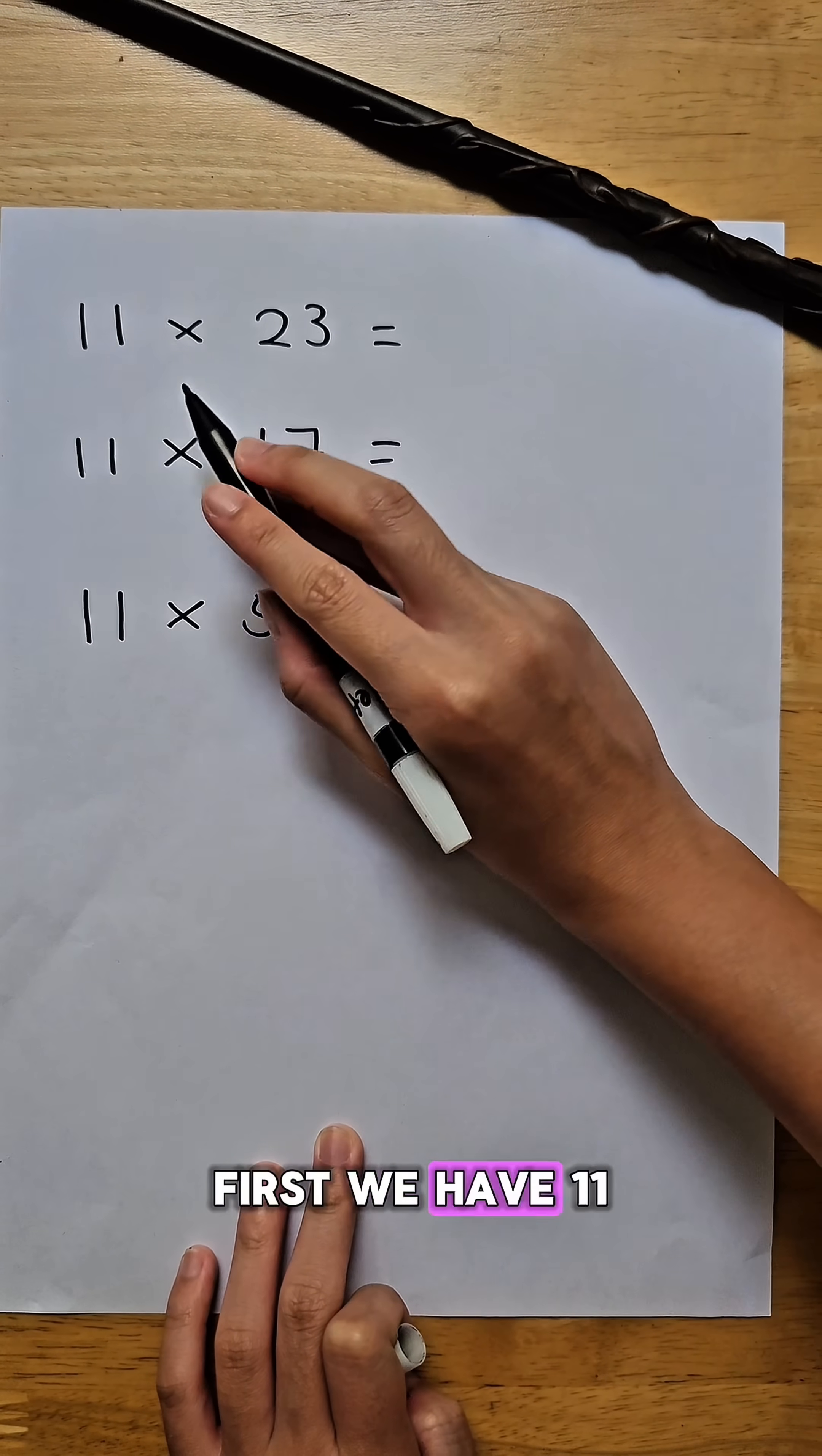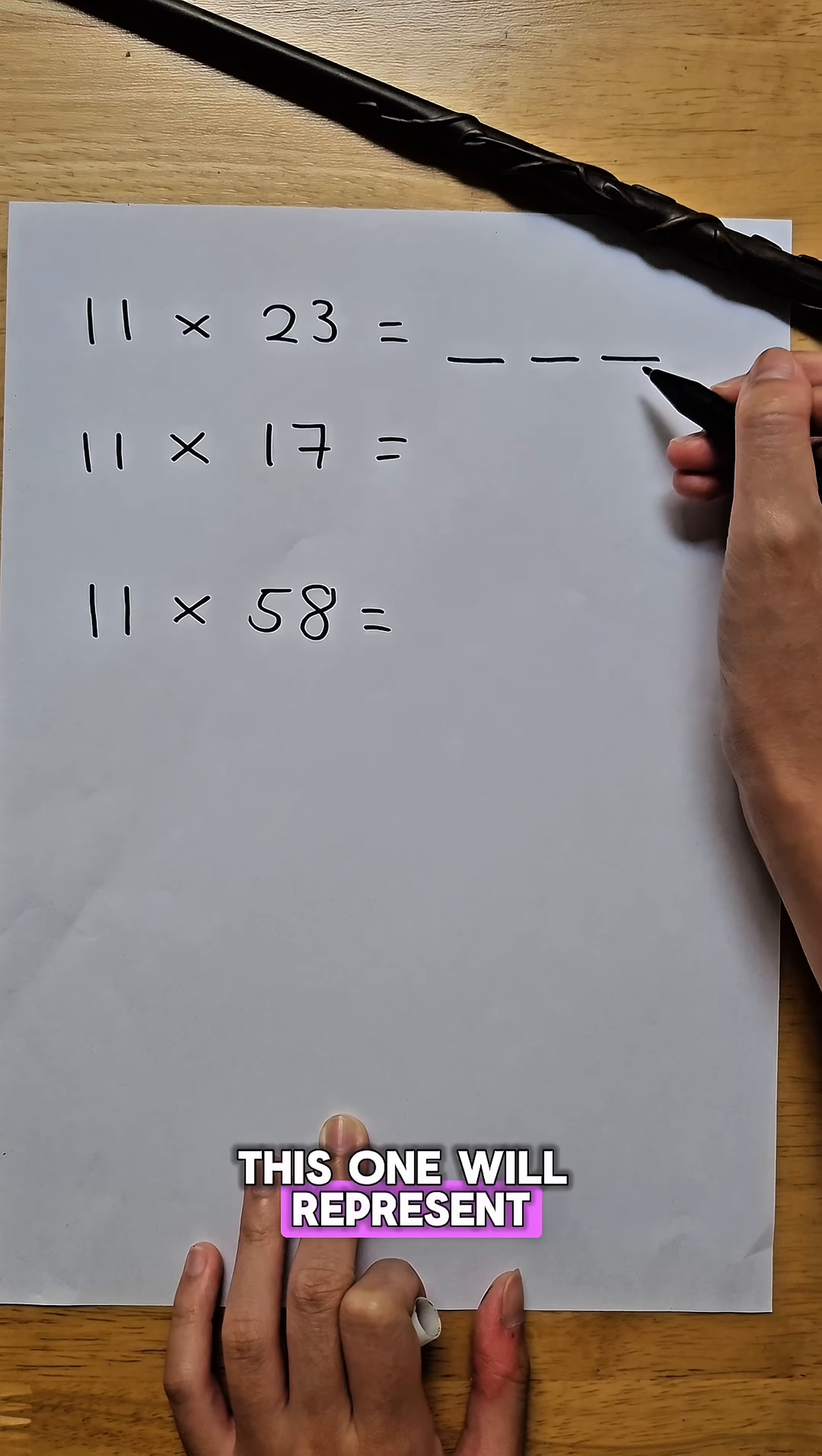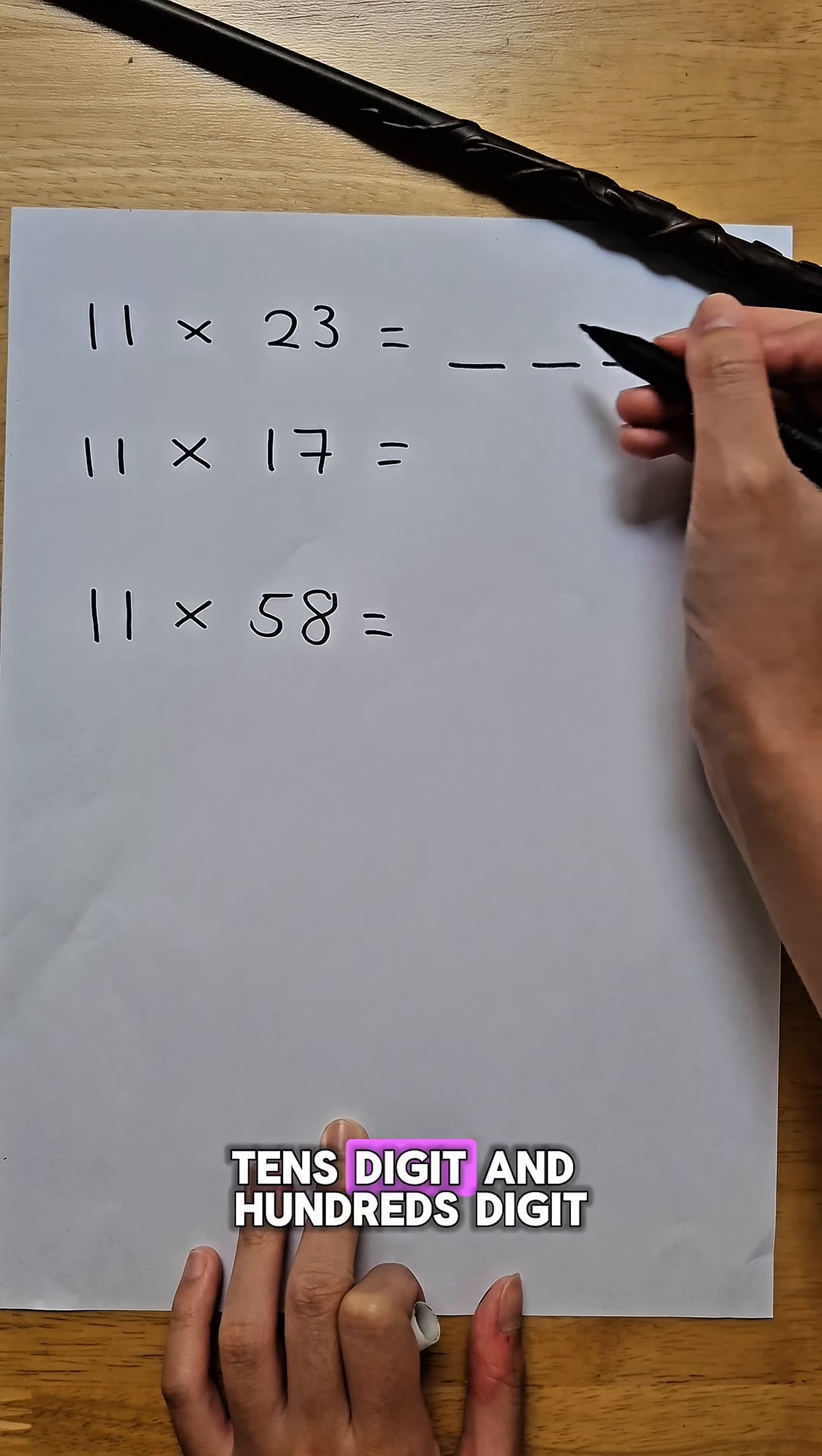First, we have 11 times 23. We have to draw three lines. This one will represent the ones digit, tens digit, and hundreds digit.